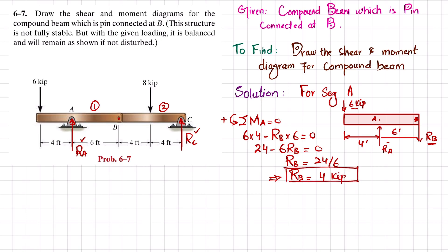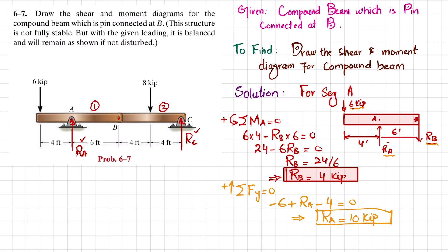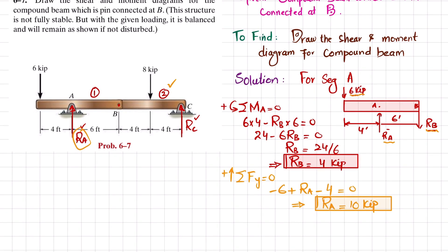Now find RA using the sum of all forces in the Y direction equal to zero, with upward forces positive. So: −6 + RA − RB = 0, and since RB = 4: −6 + RA − 4 = 0, giving RA = 10 kips.